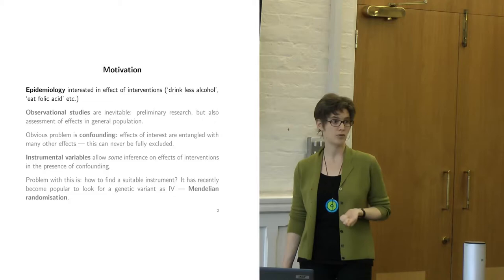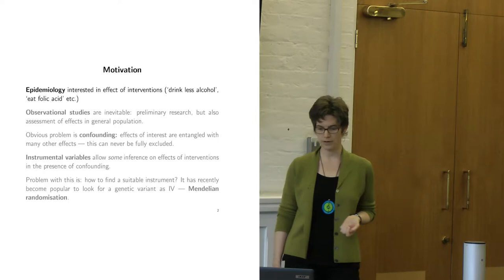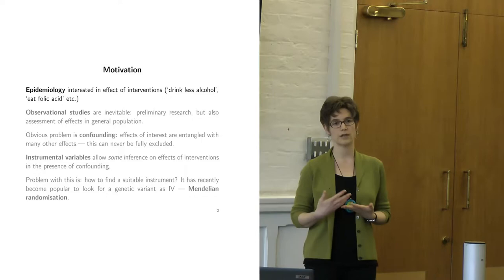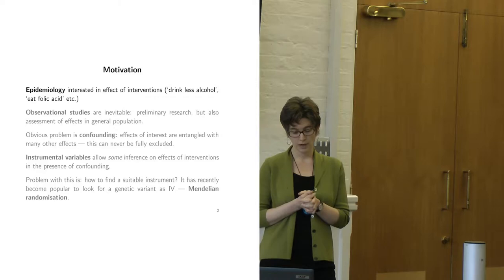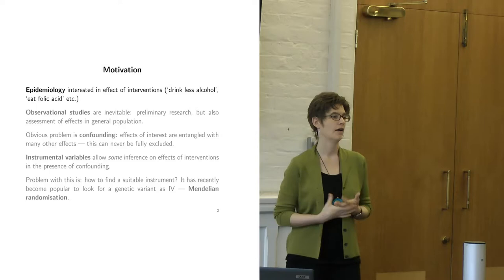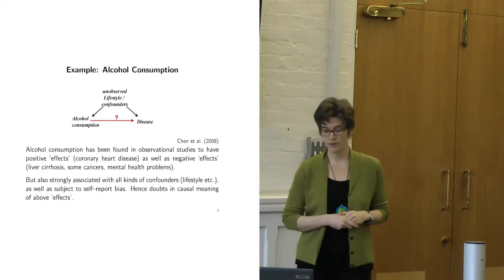In epidemiology we usually only have observational studies. A lot of the quantities of interest cannot really be randomized, or you'd only randomize them once you have a good reason to believe there is an effect. We also want to know the effect in the general population, not just in a specific population chosen for randomized controlled trials. The obvious problem is confounding. There are lots of methods to deal with observed confounding, but it's also difficult to convince yourself that you don't have unobserved confounding left, and you'd like a method that can deal with this.